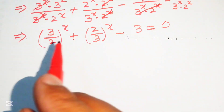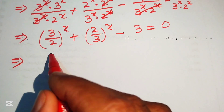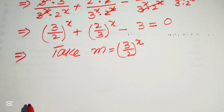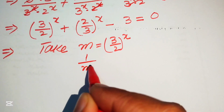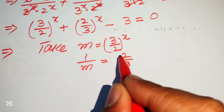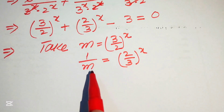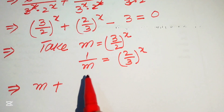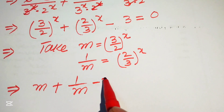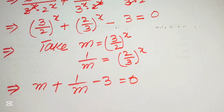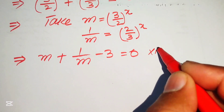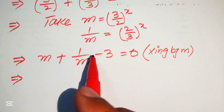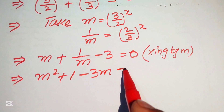Let m = (3/2)^x, which means 1/m = (2/3)^x. Substituting into the equation gives m + 1/m - 3 = 0. Multiplying both sides by m yields m² + 1 - 3m = 0.